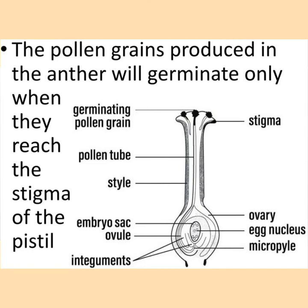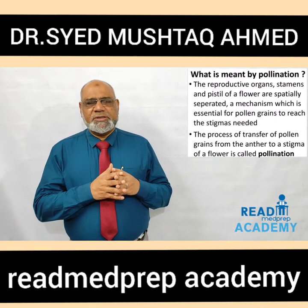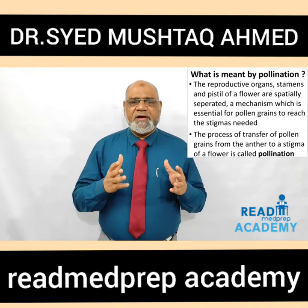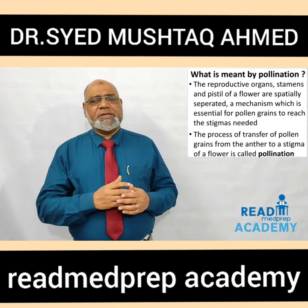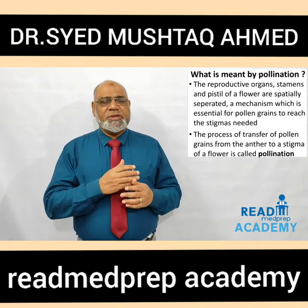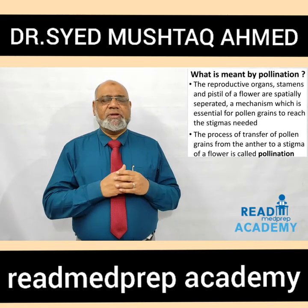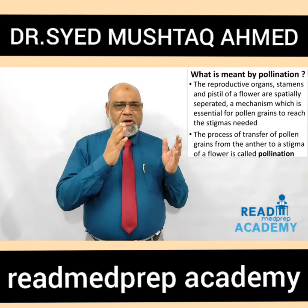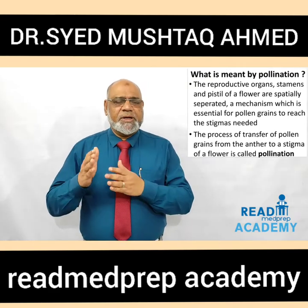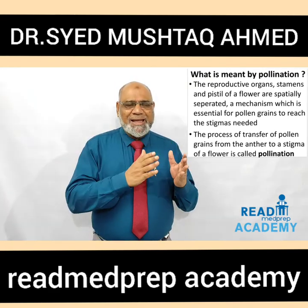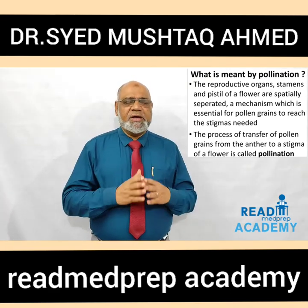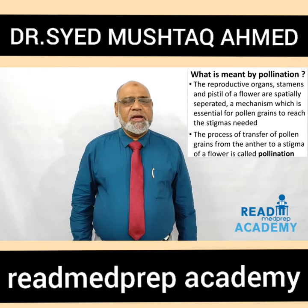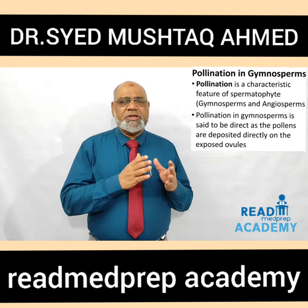On the image on the right side, you can see that the pollen grains that fall on the stigma are in various stages of germination. Only one pollen tube reaches the embryo sac. The reproductive organs — stamens and pistils — of a flower are spatially separated, and a mechanism which is essential for the pollen grains to reach the stigma is needed. The process of transfer of the pollen grains from the anther to a stigma of a flower is called pollination.